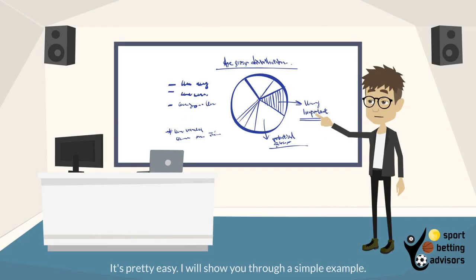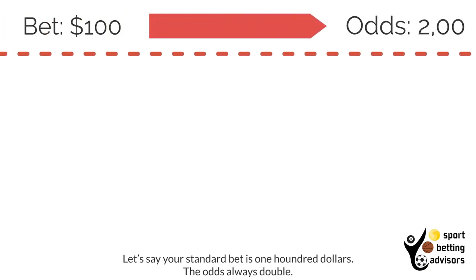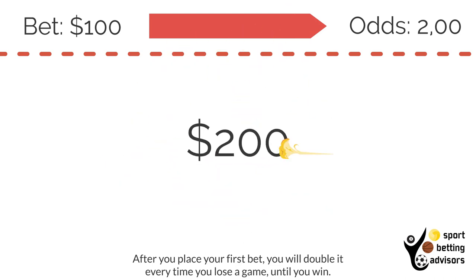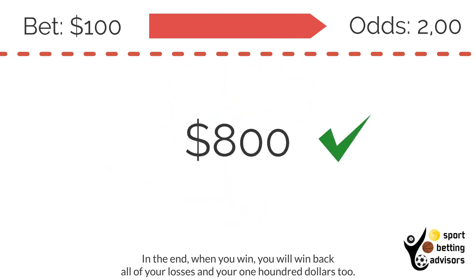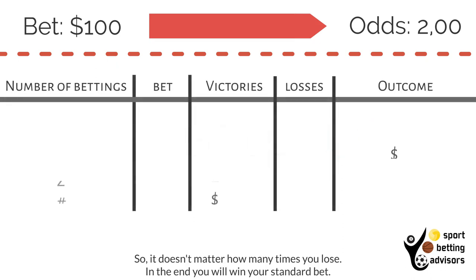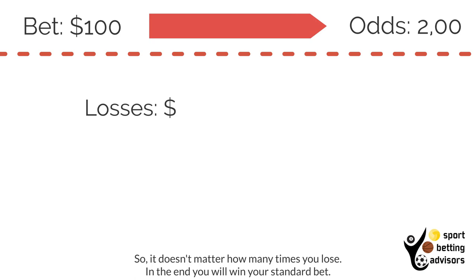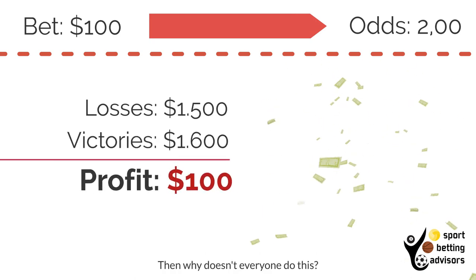It's pretty easy — I will show you through a simple example. Let's say your standard bet is 100. The odds always double after you place your first bet; you will double it every time you lose a game until you win. In the end, when you win, you will win back all of your losses and your 100 too. So it doesn't matter how many times you lose — in the end you will win your standard bet.